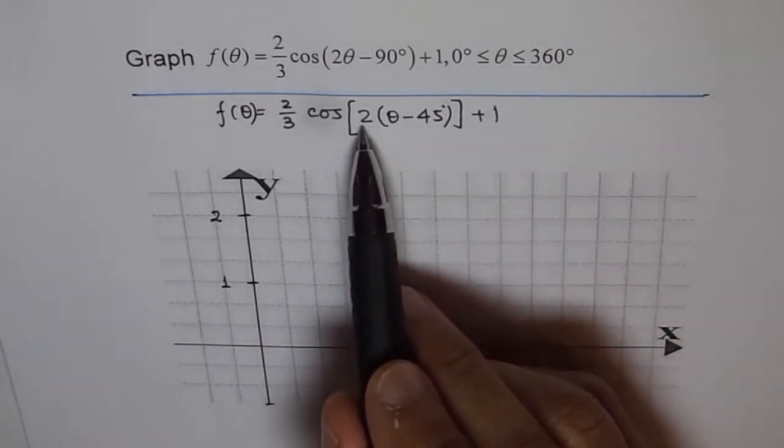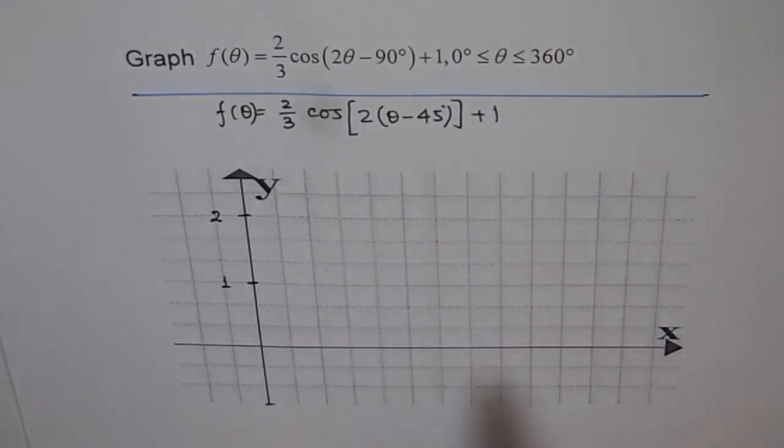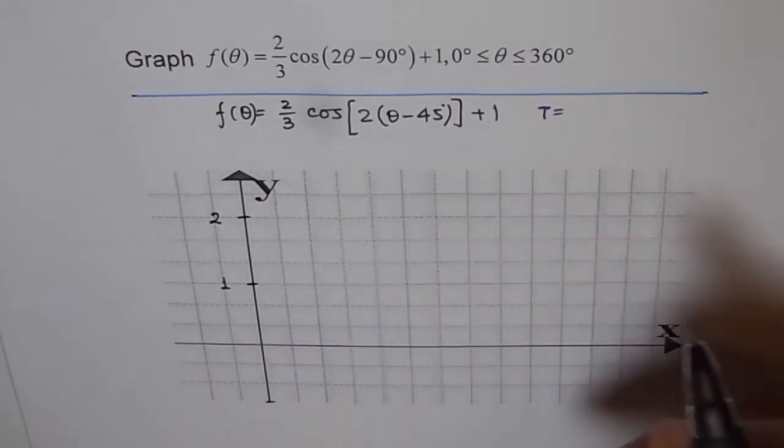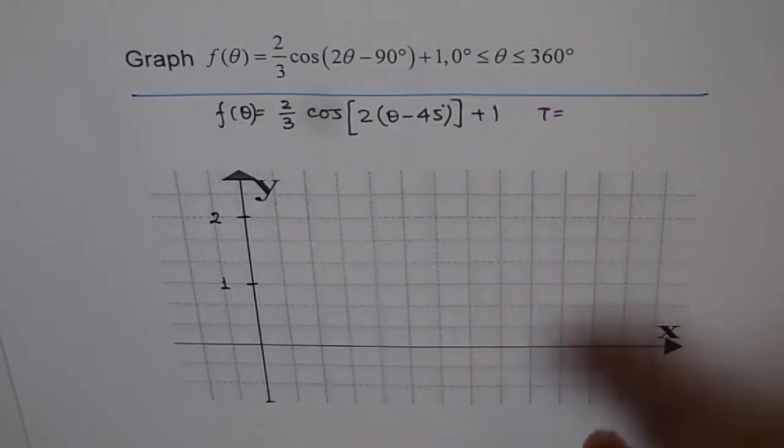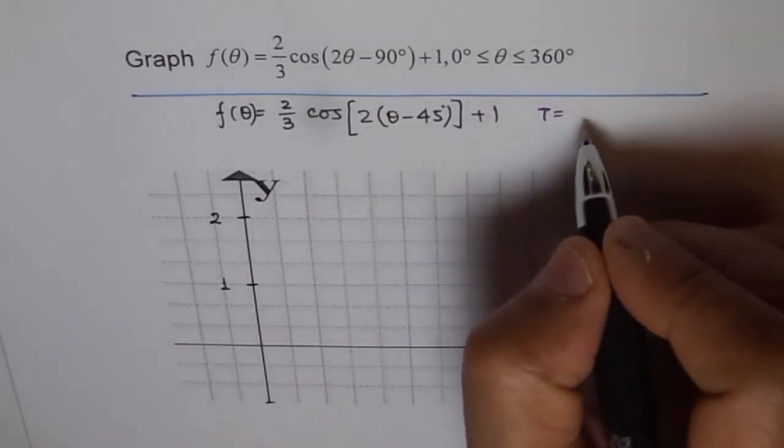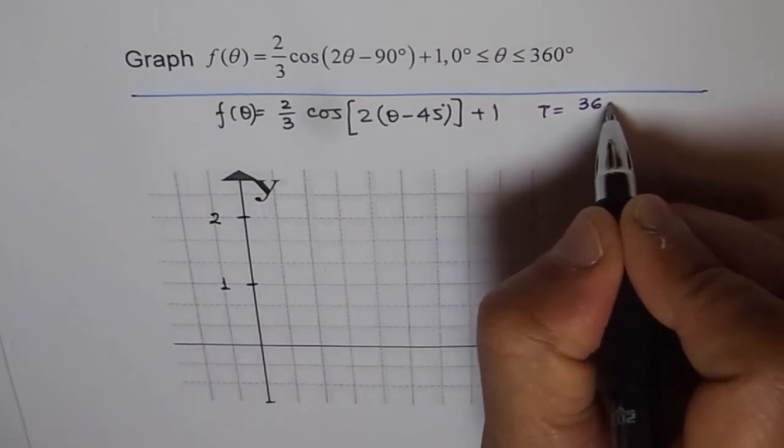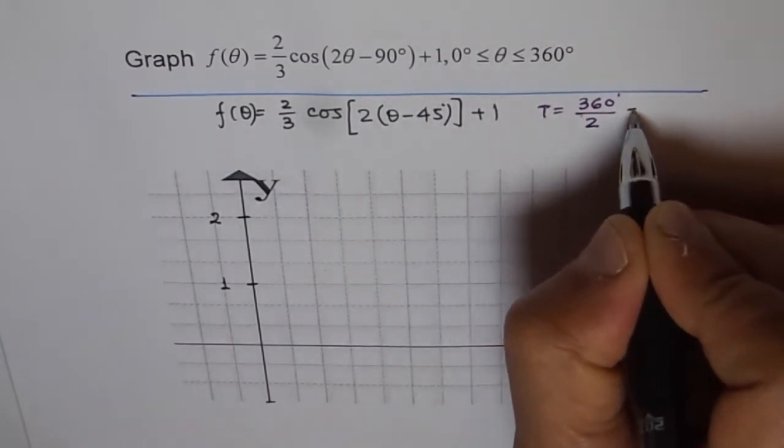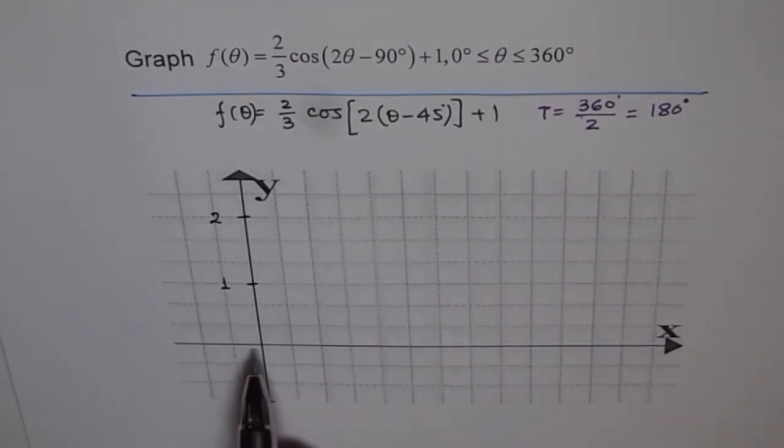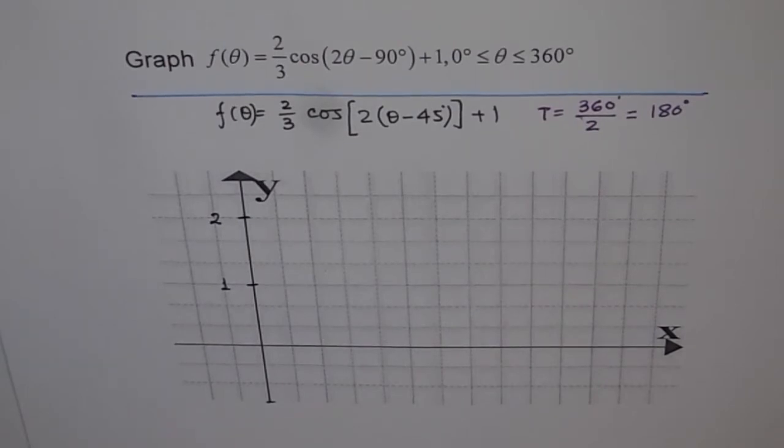The second thing is time period. If k is 2, that means what is the time period? The whole wave will actually be horizontally compressed by a factor of half. So the time period is 360 degrees divided by 2, which is 180 degrees. That means on the horizontal, we need 180 degrees to sketch at least one graph.